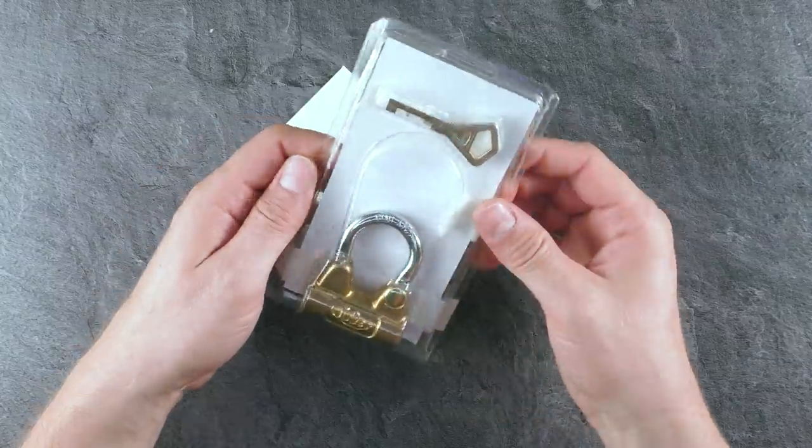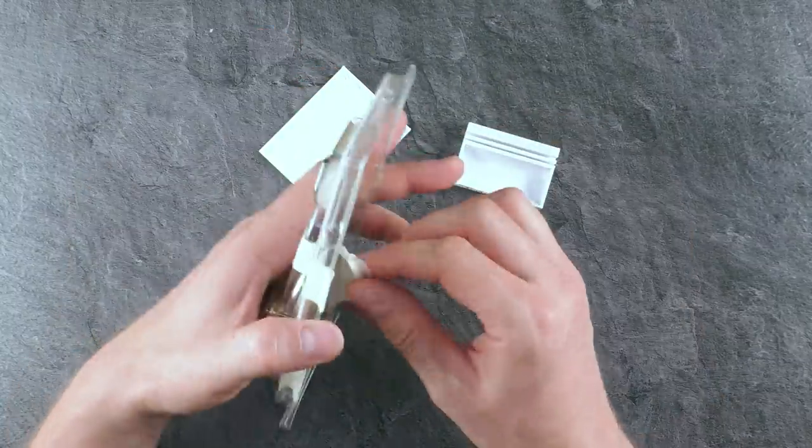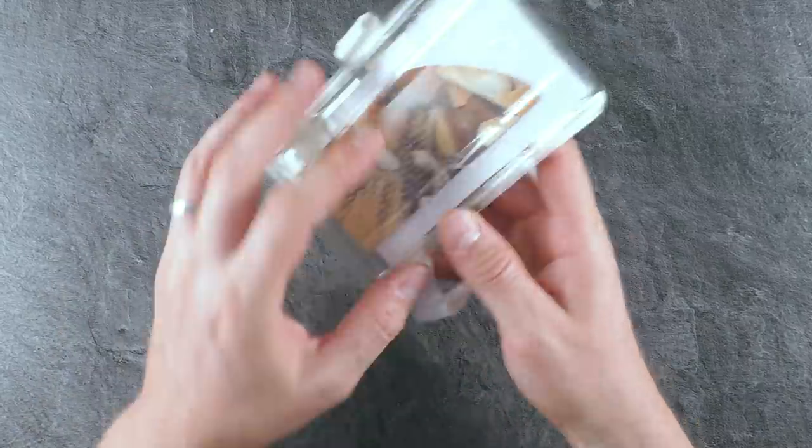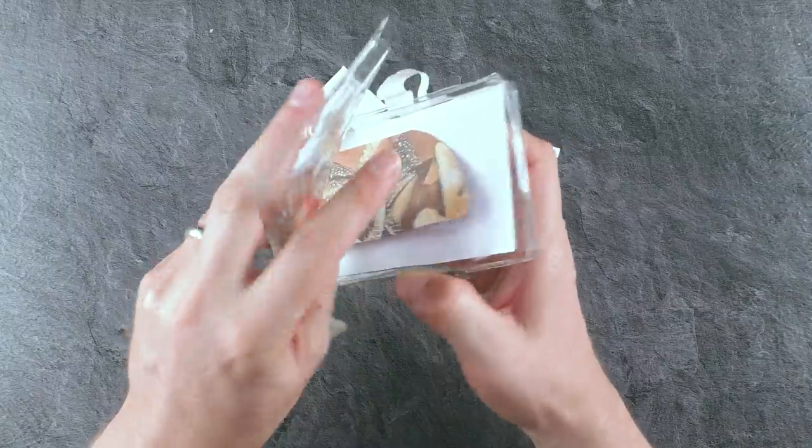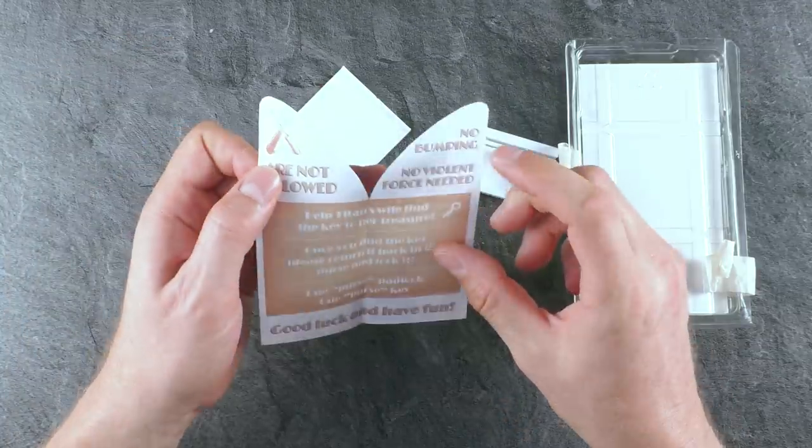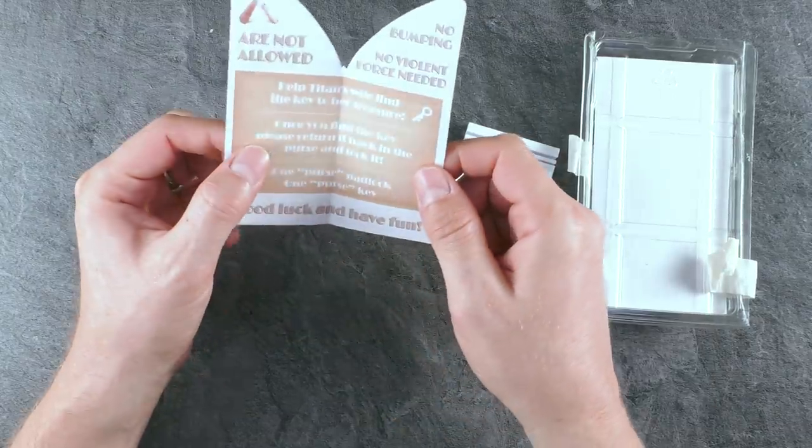It has a very unusual shape. It comes here with a little stand even I think and this puzzle lock here is called Her Key to the Treasure. I think we're gonna find out why. So here it comes with a booklet. Tools are not allowed, no bumping, no violent force needed. Good to know that. Find the key to her treasure.